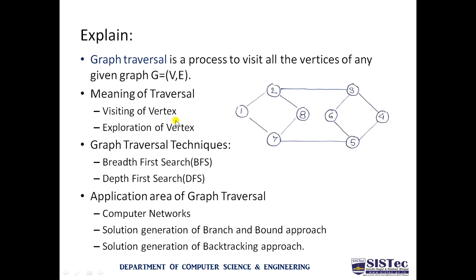What is visiting? When we reach a particular vertex, that is known as visiting a node. Once we visit a particular node, the next step is to explore it — meaning we find out all the adjacent nodes of the given graph. For example, node 1: once we reach node 1, that is visiting. When we find adjacent nodes 2 and 7, that is exploration.